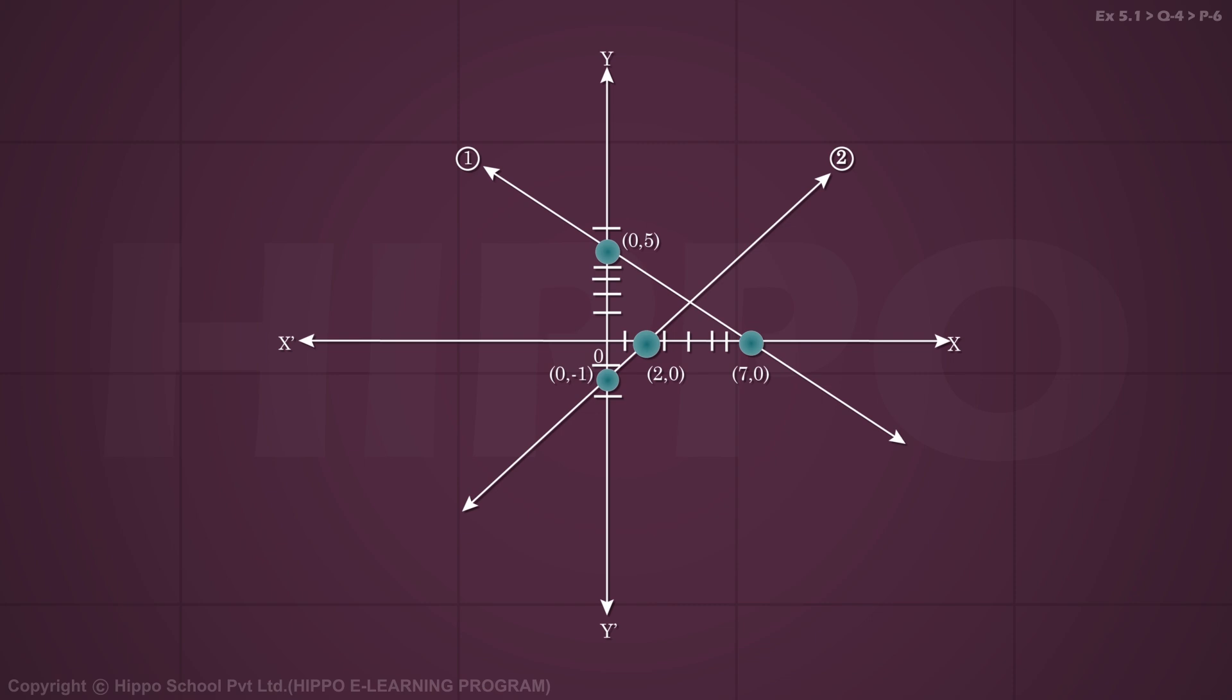Now graph both. The x-axis and y-axis are marked. First two points are (7,0) and (0,5). Second two points are (2,0) and (0,-1). We will join them. Both lines will be shaded towards the origin side.